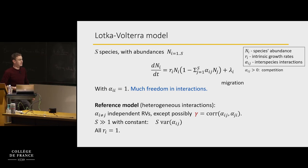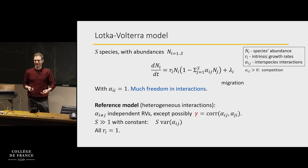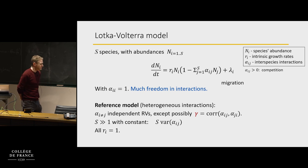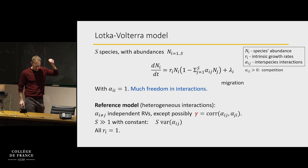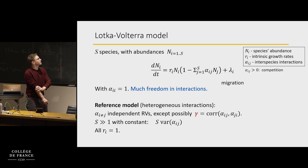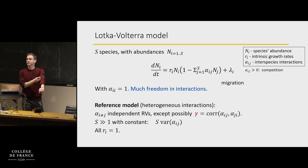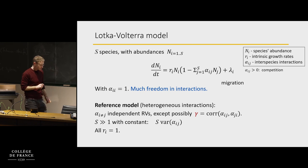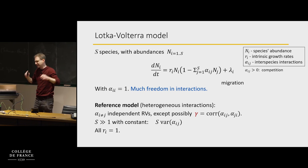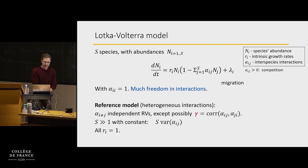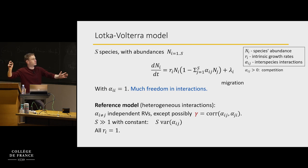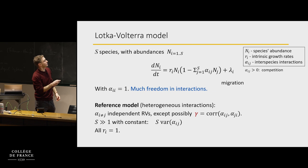One possible approach — which might be natural to this crowd — is to take these numbers to be random numbers from some distribution. The simplest assumption is that these are independent random numbers from some distribution. You sample these numbers and fix them. Those are the rules of the game. Then you let the system run in time with fixed alpha values.